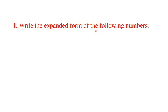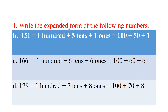Now let's learn how to write the expanded form. Write the expanded form of the following numbers. First: 151. What number is in the 100's place? It is 1, so we write 100. Which number is in the 10's place? It is 5, so we write 5 tens. Plus, 1 is in the 1's place, so we write 1 one. The expanded form is 100 + 50 + 1.